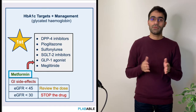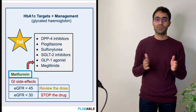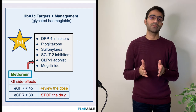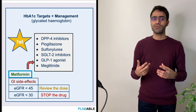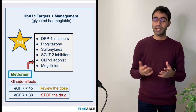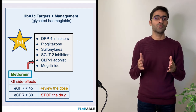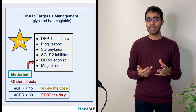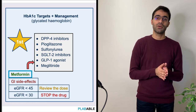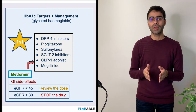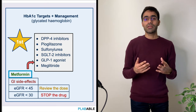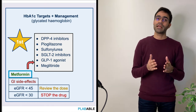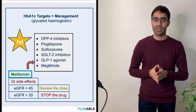The first choice of agent in patients with diabetes mellitus is the biguanide metformin. Patients on metformin can have GI disturbances like abdominal cramps and diarrhea, and such patients need to be shifted to modified-release metformin. Another adverse effect of metformin is lactic acidosis, which we need to keep in mind.